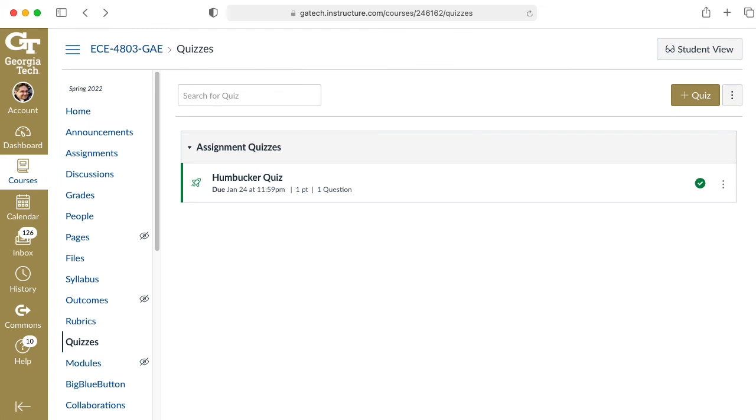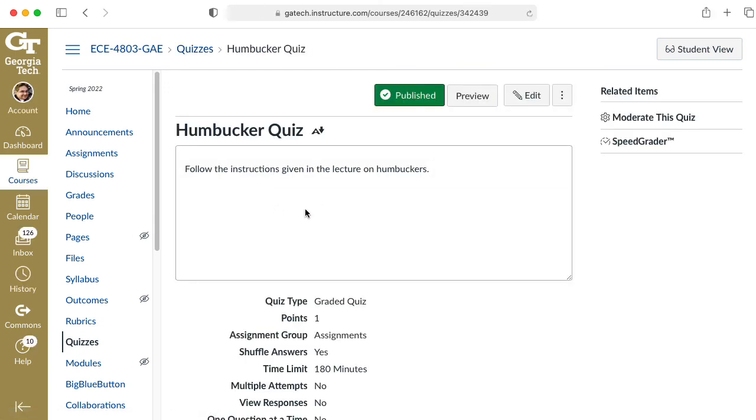Now, if you are not one of my students in my class at Georgia Tech, you can quit watching here, but if you are one of my students, keep watching. Go to Canvas and you'll find a quiz called Humbucker Quiz. And if you click on it, you will take that quiz and the quiz will have one question. I want you to tell me what is your favorite musical artist, either a band or a solo artist.